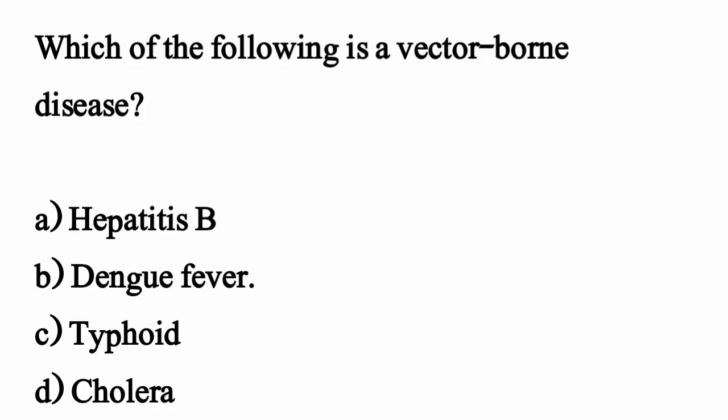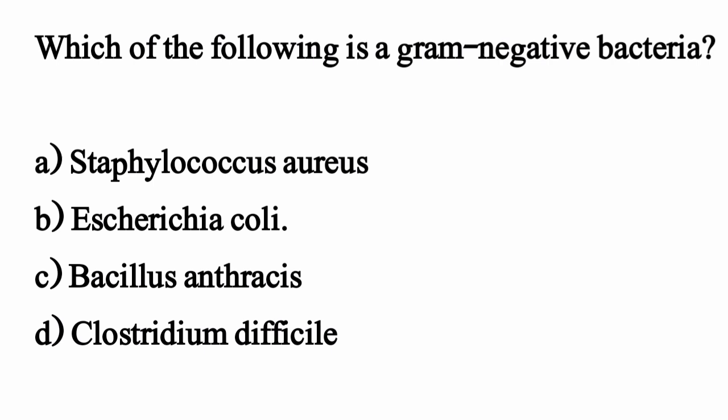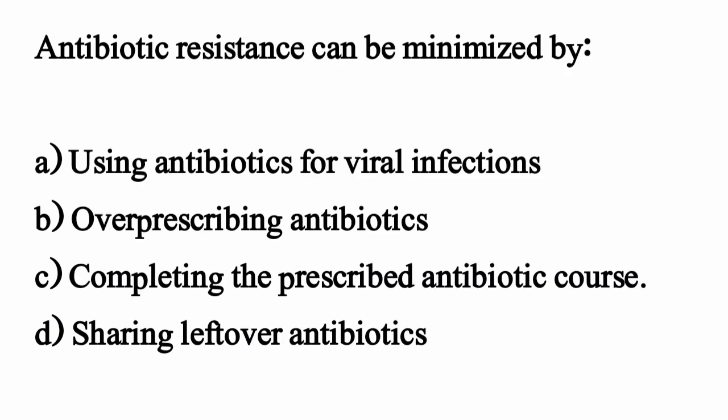Which of the following is a vector-borne disease? The correct option is option B. Which of the following is a gram-negative bacteria? The correct option is option B. Antibiotic resistance can be minimized by — the correct option is option C: completing the prescribed antibiotics.